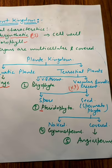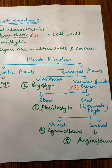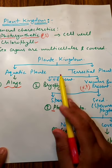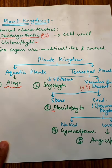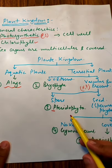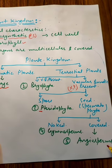Seed could be naked as well as covered. If it is naked, it will come under the category gymnosperm — gymno means naked और sperm means seed. Naked seed वाले gymnosperm division के अंदर आ जाएंगे और अगर covered है, so we will consider that angiosperm. So plant kingdom is further divided into five divisions: division algae, bryophyta, pteridophyta, gymnosperm, and angiosperm.